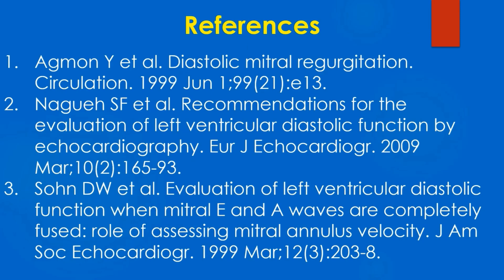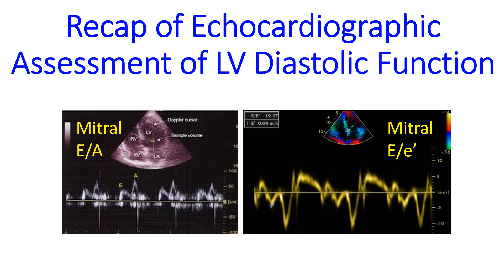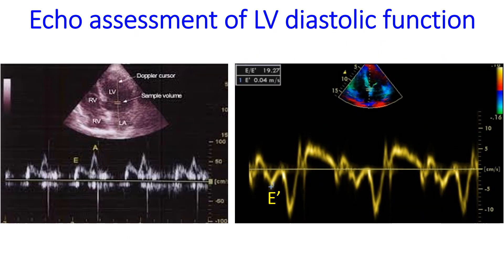Here are a few important references on mitral EA fusion and assessment of LV diastolic function. Regarding echocardiographic assessment of LV diastolic function with special reference to atrial fibrillation: though there are several parameters for evaluation of LV diastolic function by echocardiography, the most commonly used are the pulsed Doppler mitral E by A ratio and tissue Doppler mitral E by E prime ratio.